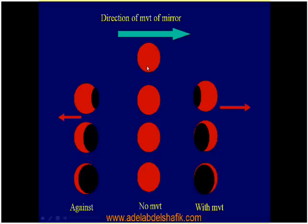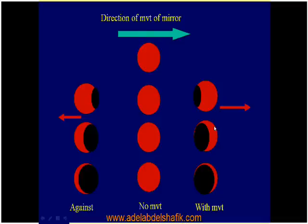If we are looking at the pupil and moving the mirror from one side to the other, the red reflex will do one of three things: it may move against our movement, move with our movement, or not move at all. As we move the mirror, the red reflex moves in the opposite way — this is an against movement. With movement means the red reflex moves in the same direction. The third situation is that the red reflex does not change at all.